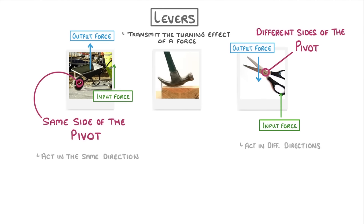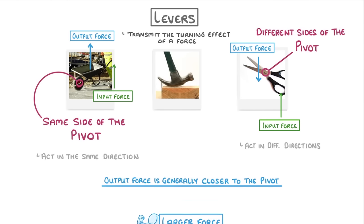The other thing to notice is that the output force is generally closer to the pivot than the input force, and this means that it'll be a larger force. This is basically the whole point of levers - we're able to get a large output force with a relatively small input force.